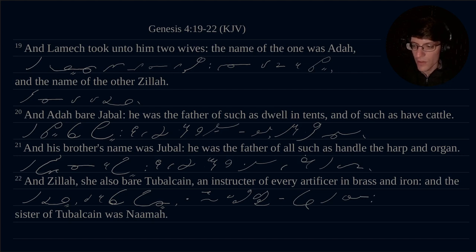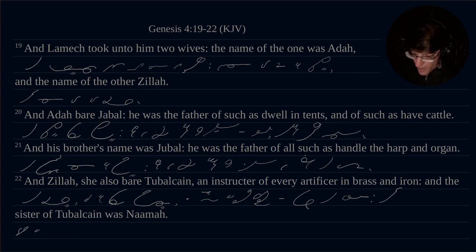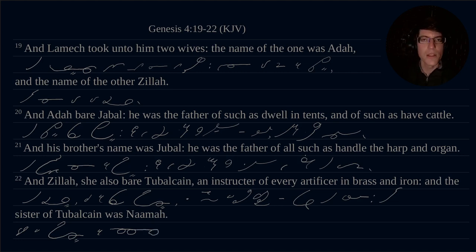And the sister of Tubal-cain was Na'amah. Such a tricky stroking. There we go. Was Na'amah — for this one, it's probably a little bit unorthodox in Gregg, but we have two vowels next to each other to show the difference. Na'amah — a re-sounding of the vowel.